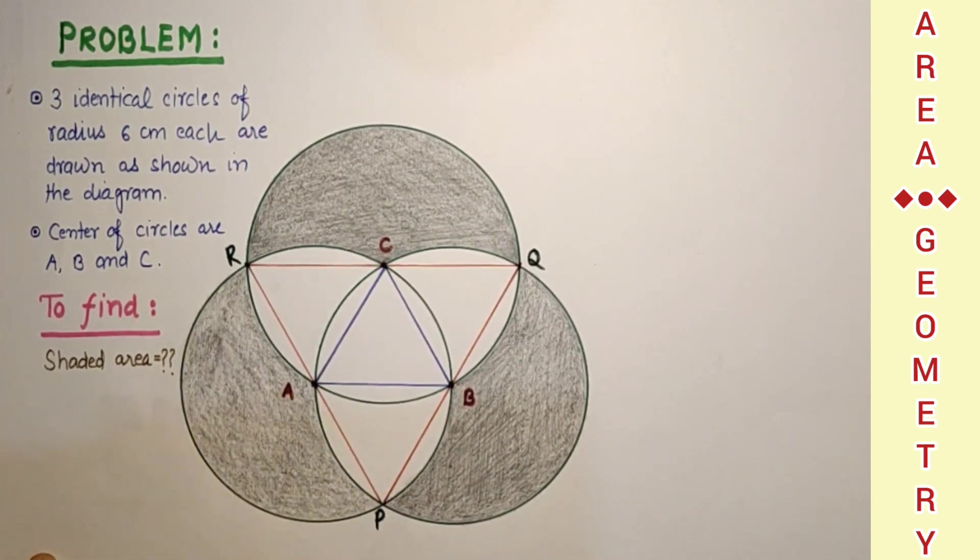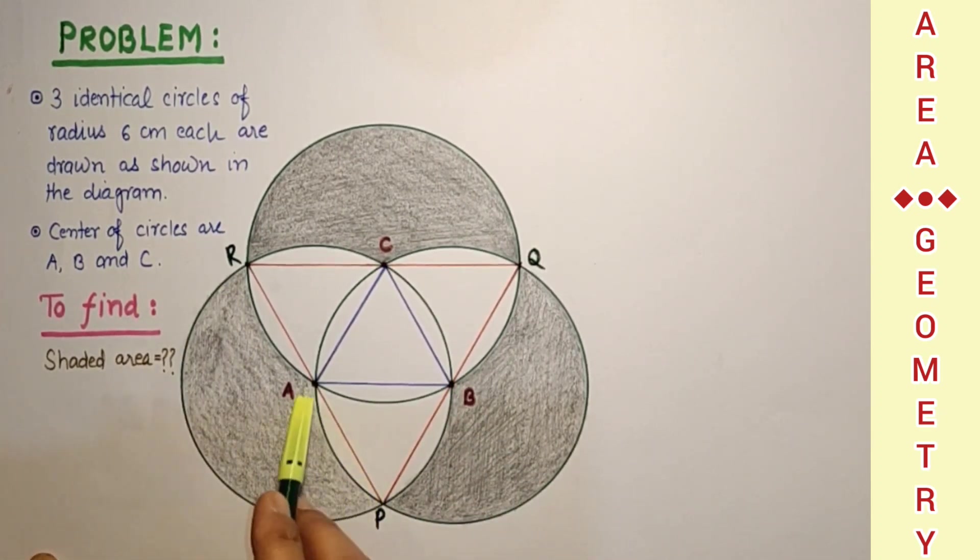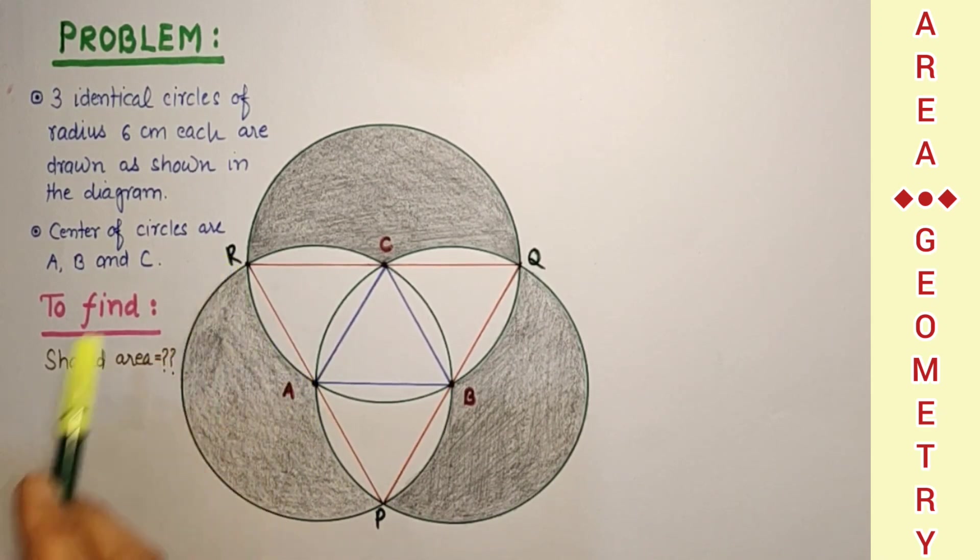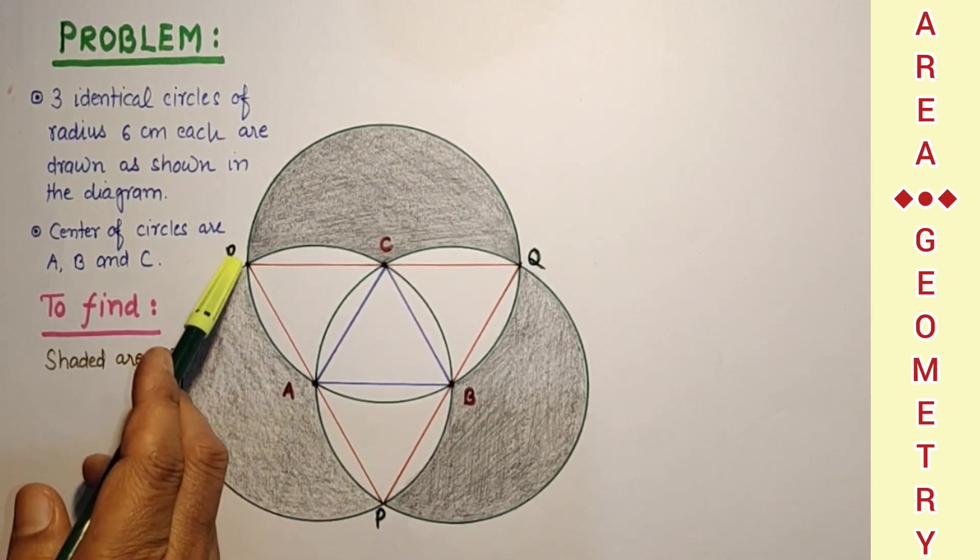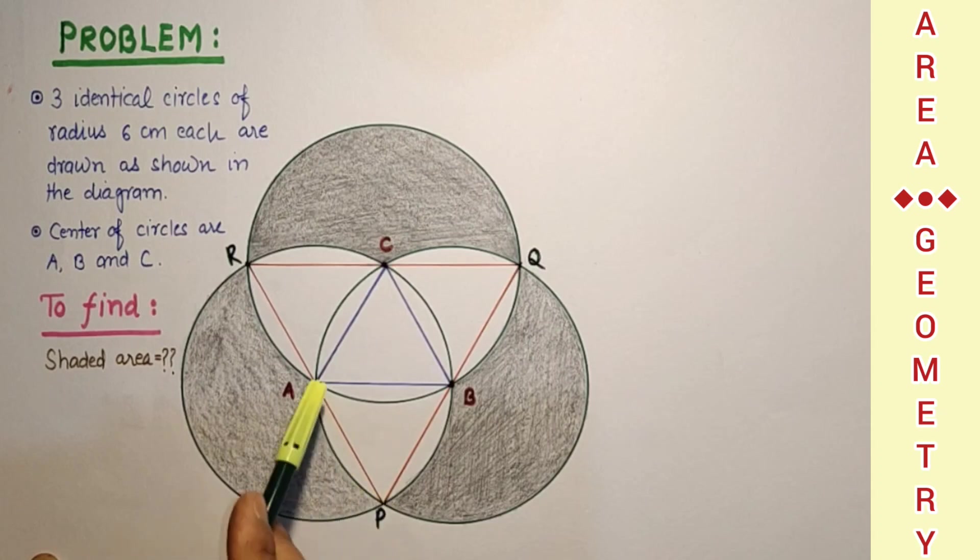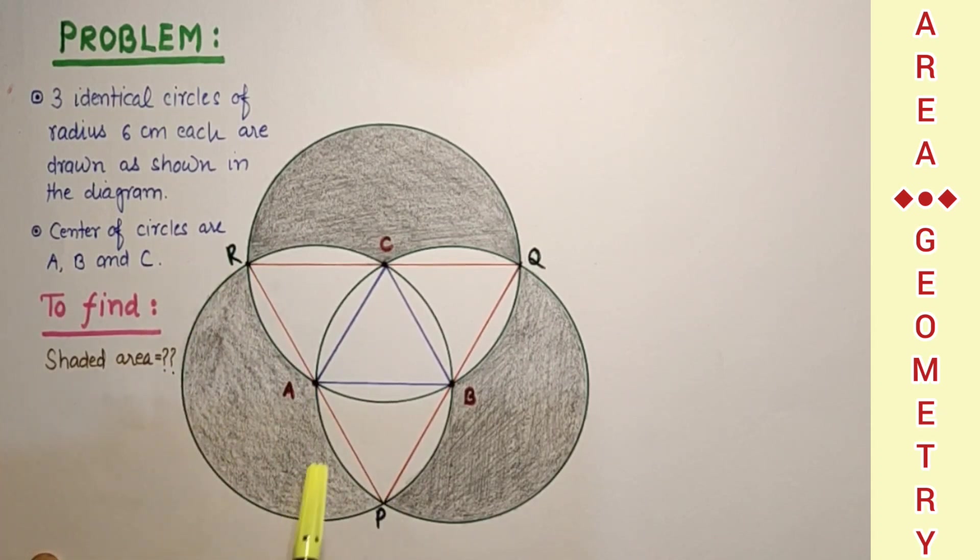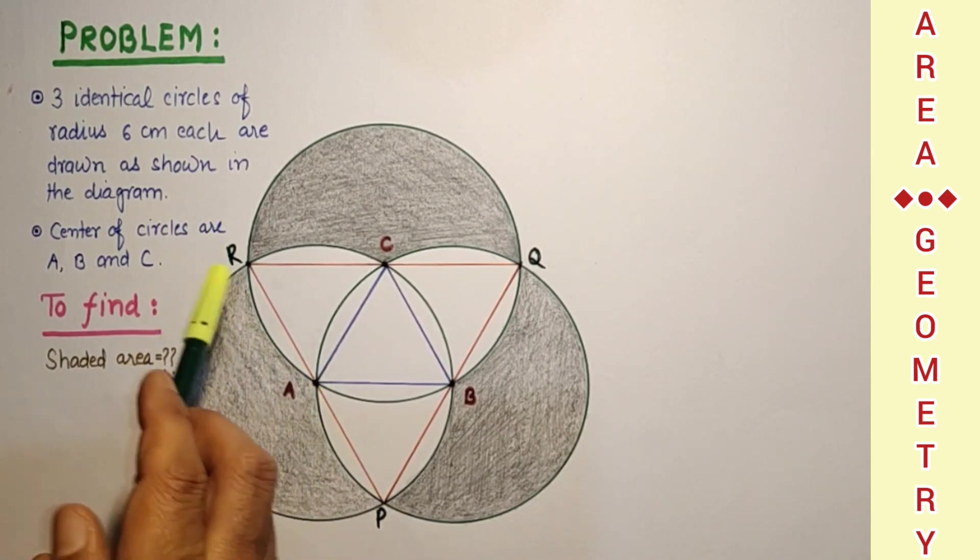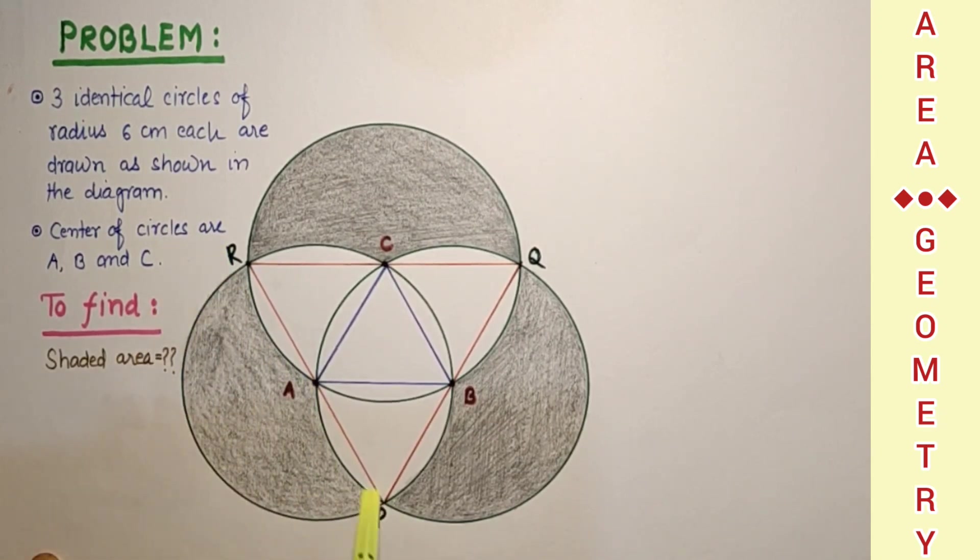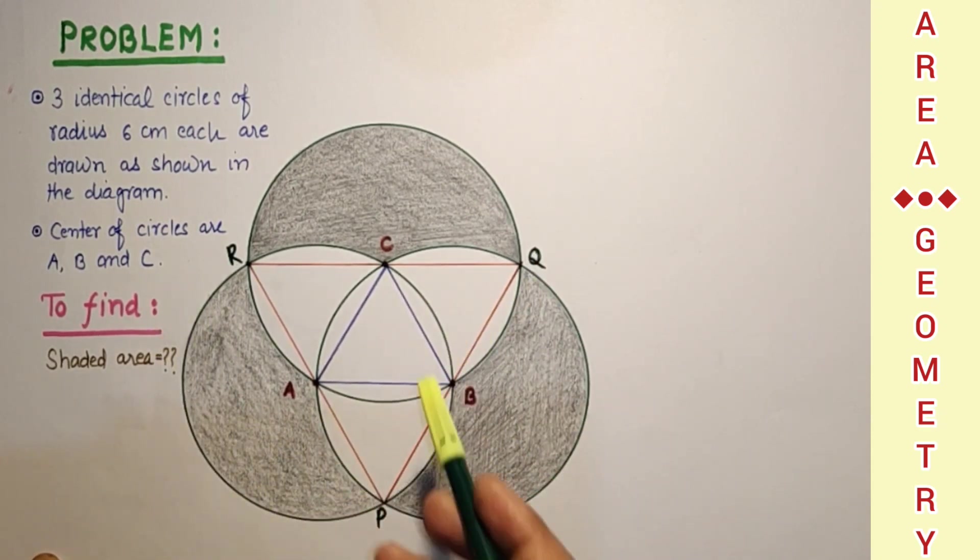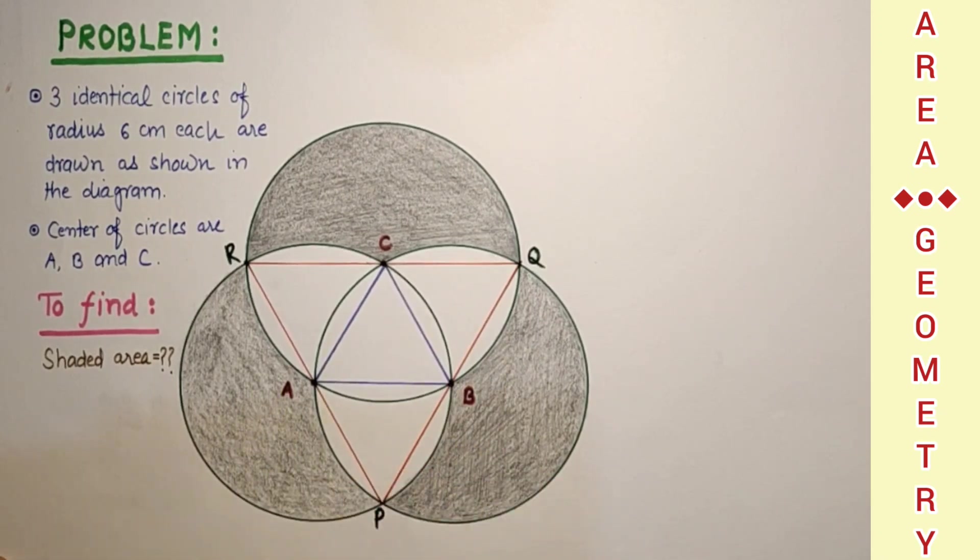This P, A and R will be collinear because P, A is radius. A, R is radius. And P, R is diameter because passing through the center. Two radius will be diameter which would pass through center. So that is why P, R, P, Q and Q, R are all diameters of the identical circles.